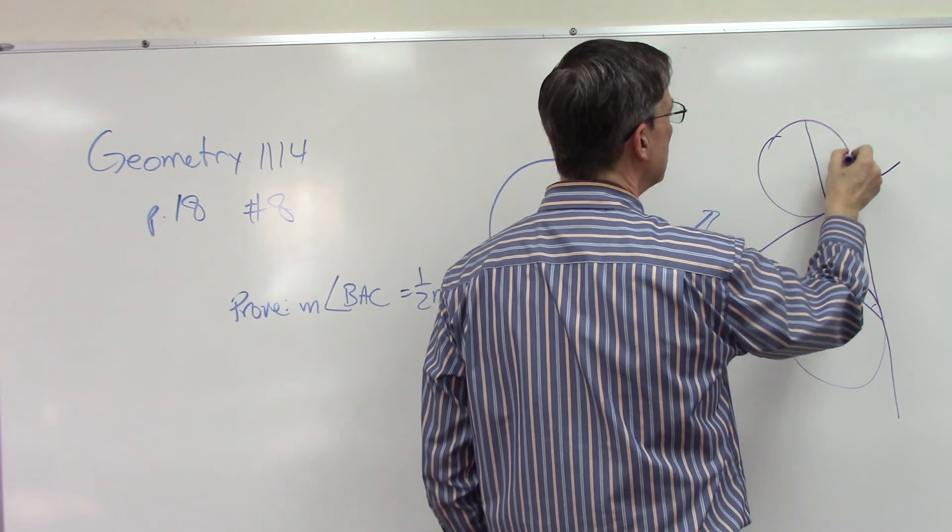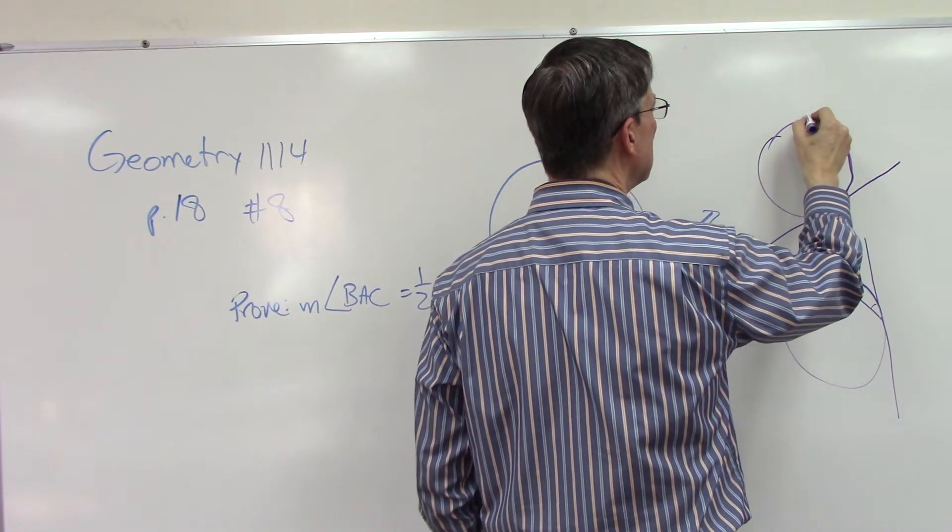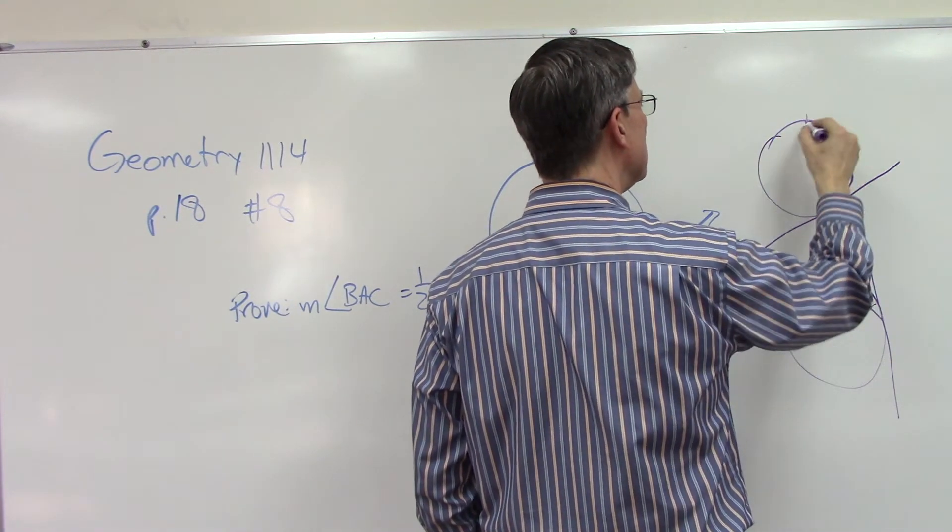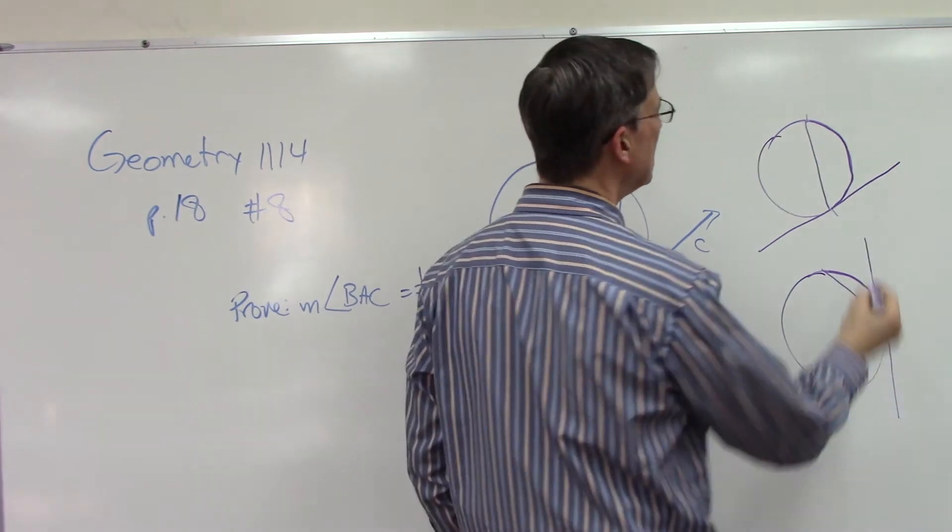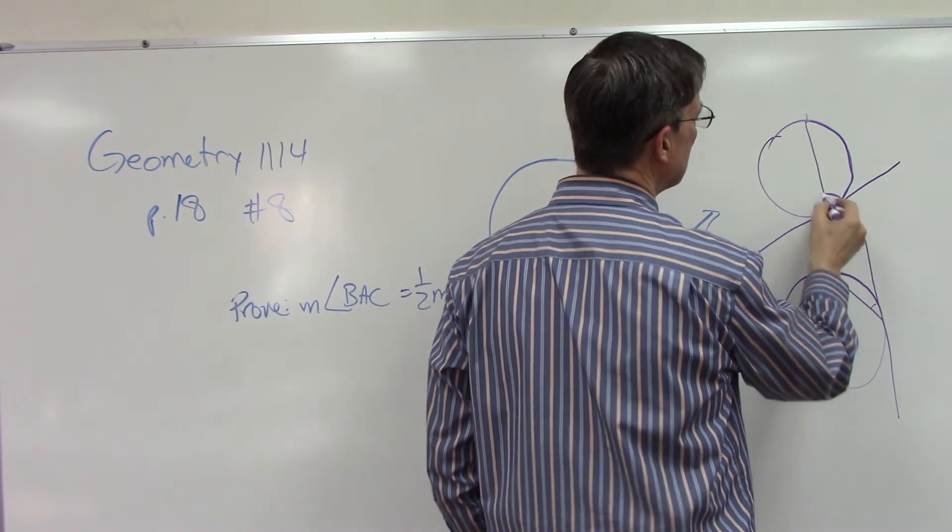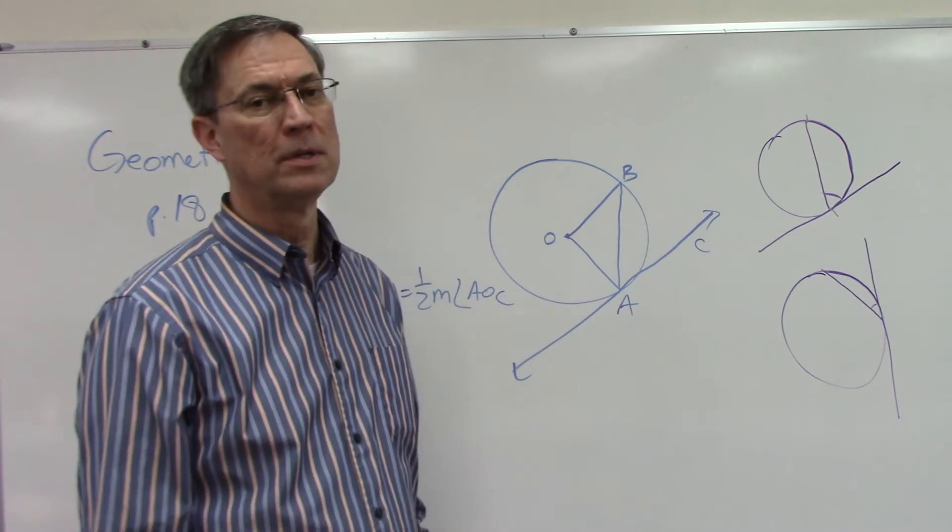Up here, if this intercepted arc from here to here is, let's say it's 100 degrees, then that means this angle here has to be half of that, or 50 degrees.